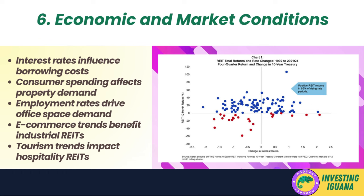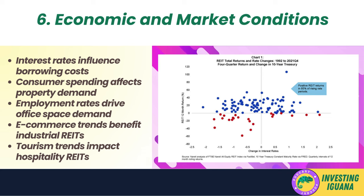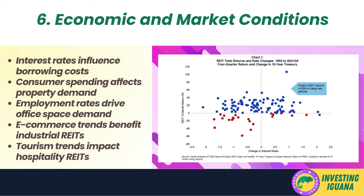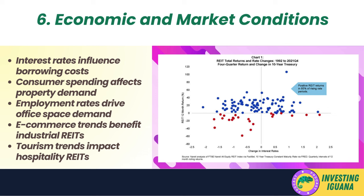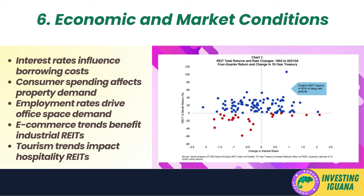Higher consumer spending can boost demand for retail spaces, while higher employment rates can drive demand for office spaces. For commercial and industrial REITs, business spending and e-commerce trends are particularly important — increased business spending can signal a healthy economy, and the rise of e-commerce has increased demand for warehouses and distribution centers, benefiting industrial REITs. Hospitality REITs, which include hotels and resorts, are influenced by trends in tourism and consumer preferences, such as a shift towards boutique hotels or eco-friendly accommodations.